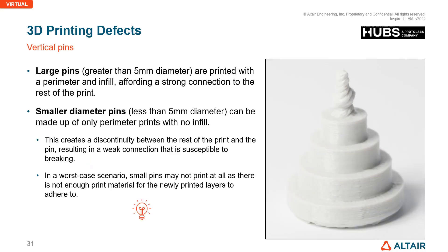Small diameter pins can be made of only perimeter lines with no infill, while large pins are printed with a perimeter and infill, avoiding a strong connection to the rest of the print. This creates a discontinuity between the rest of the print and the pin, resulting in a pin connection that is susceptible to breaking.